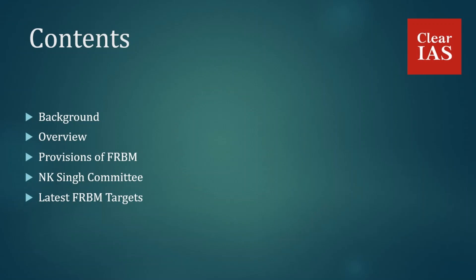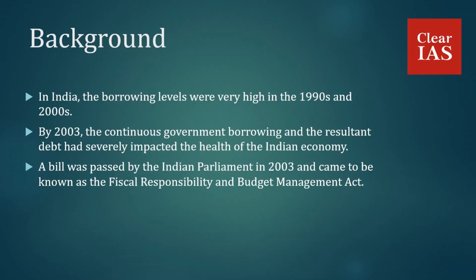Why was the FRBM Act enacted? In India, borrowing levels were very high in the 1990s and 2000s. The Indian economy was weak, with high fiscal deficit, high revenue deficit, and high debt-to-GDP ratio. By 2003, continuous government borrowing and the resultant debt had severely impacted the health of the Indian economy. Much of the borrowing was utilized for interest payments on previous borrowings rather than for productive purposes, resulting in interest payments becoming the largest expenditure item of the government.